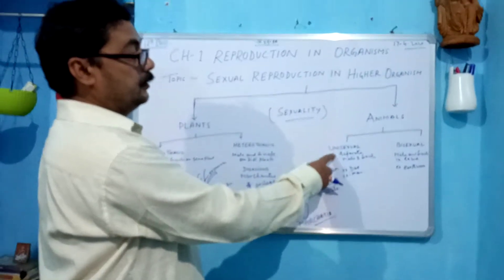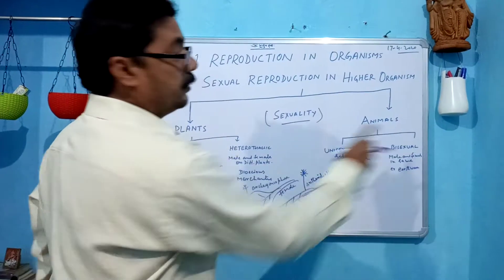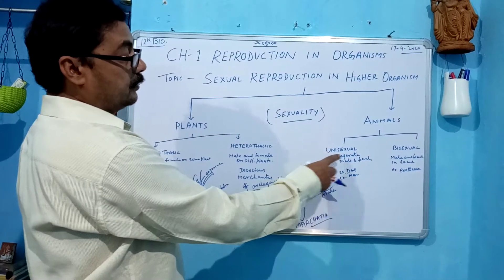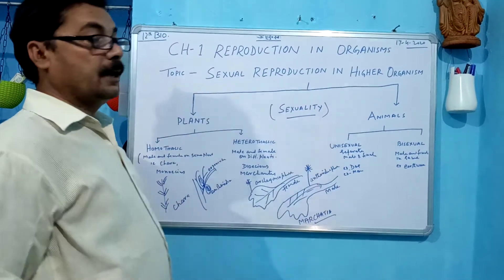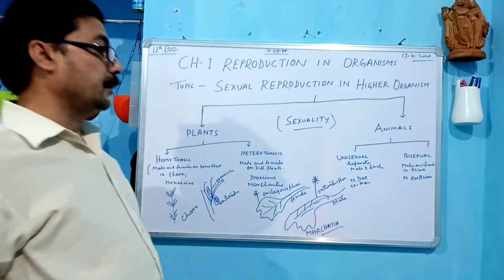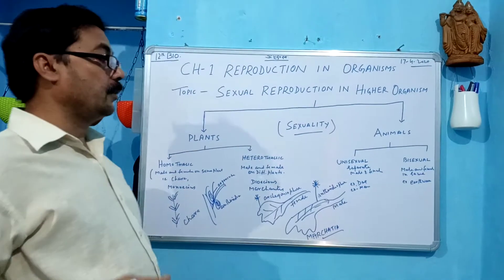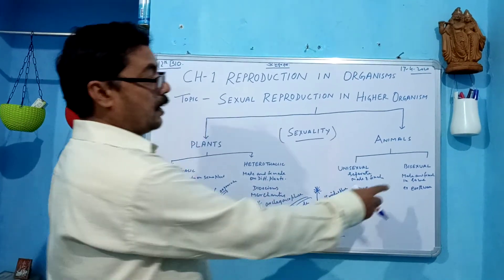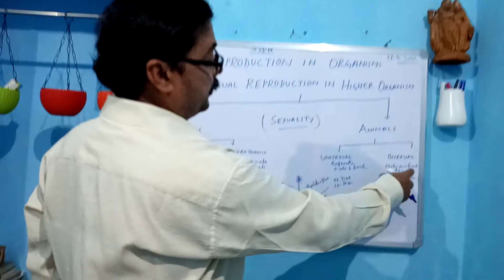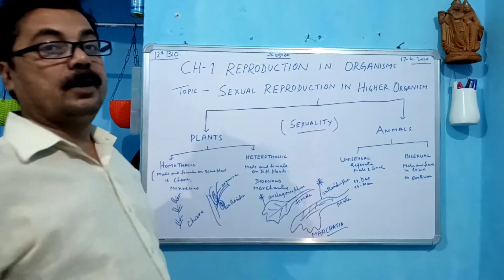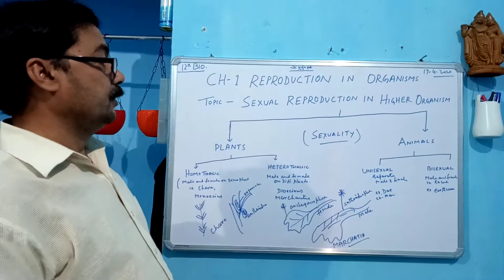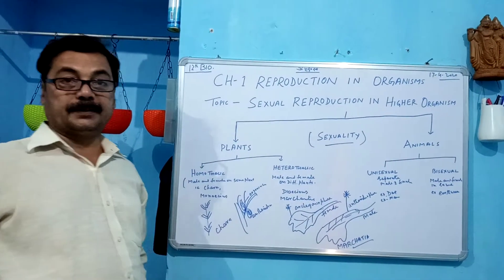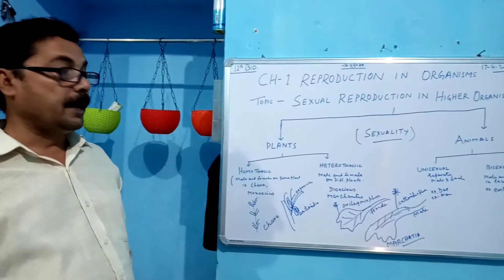In the animal case, there is sexuality as well: unisexual and bisexual. Unisexual means a separate male and separate female, as in the case of dogs and humans — higher organisms that have different male and female individuals. In the bisexual case, male and female are in the same organism, as in the case of earthworm. That sexuality is part of sexual reproduction in higher organisms.